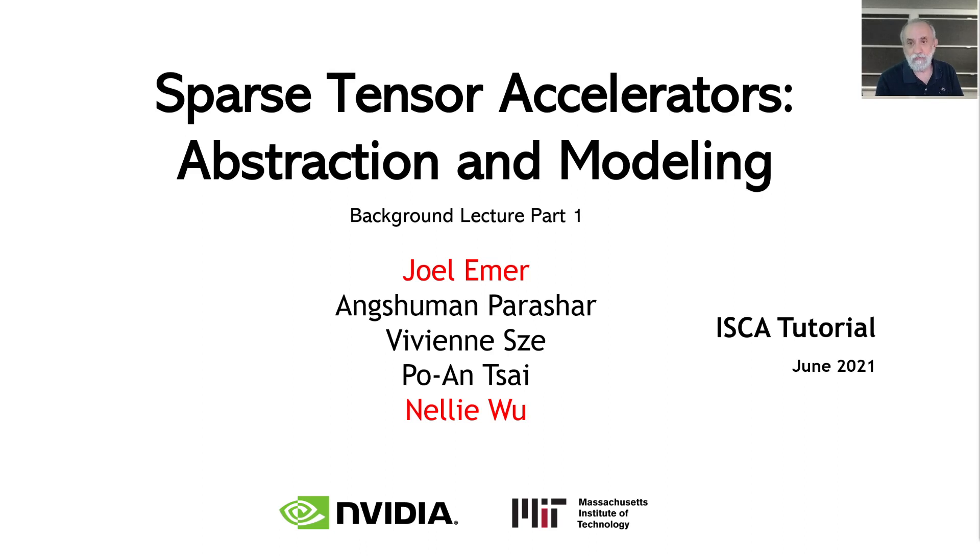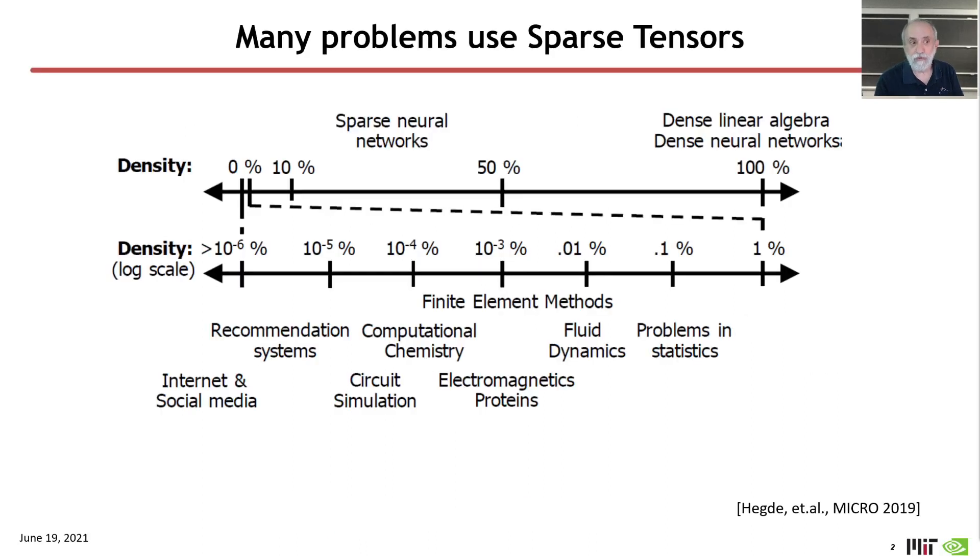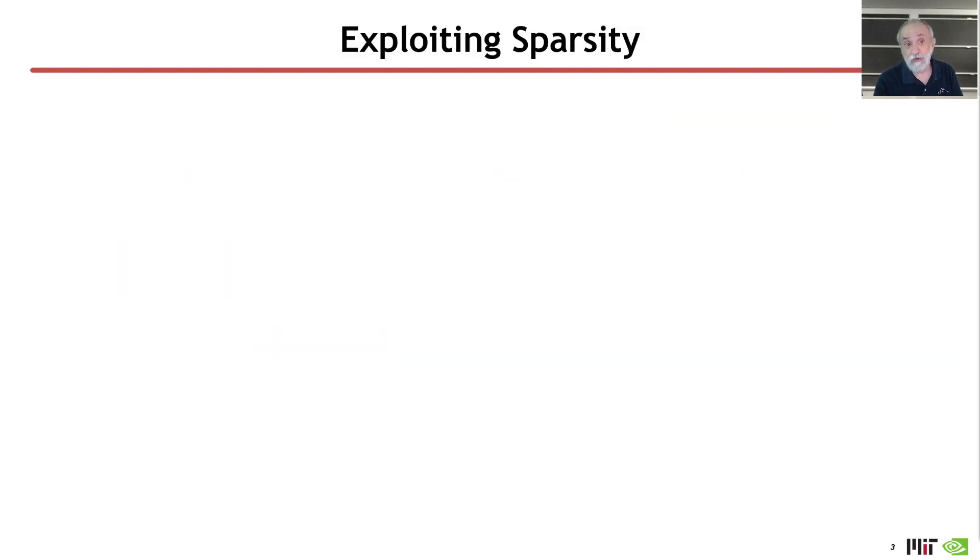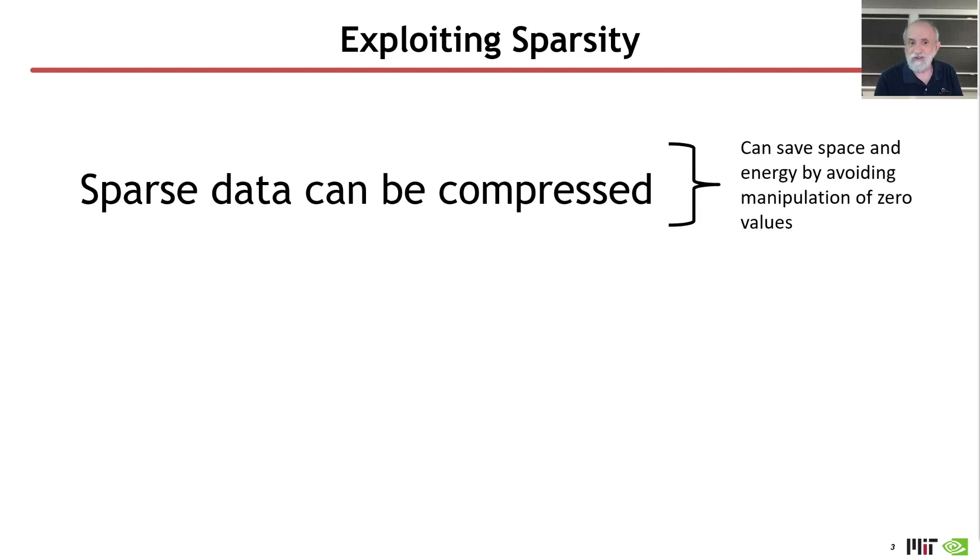So why are we interested in sparse tensors and accelerating them? Well first, there's many problems that actually use sparse tensors. They range from sparse neural networks to internet and social media which are extremely sparse. In hardware, there's an opportunity for exploiting that sparsity. First, when data has a lot of zeros in it, that data can often be effectively compressed. That means in hardware that we can save space and energy by avoiding manipulations of zero values.